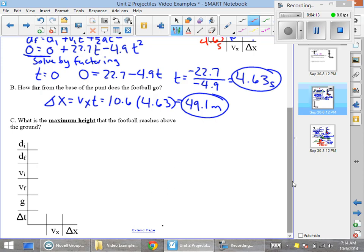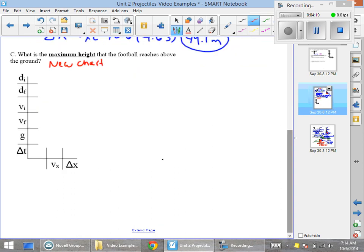So at maximum height, we're going to actually need a new chart. So I'm going to redo the chart down here. We still start out with our same initial velocity of 22.7 and 10.6 for our vy and vx. We know di. This time we don't know df—this is actually what we're trying to solve for. And we know that gravity is negative 9.8 meters per second squared. We don't really know time.